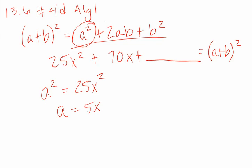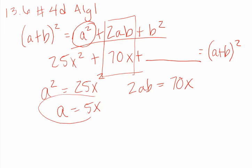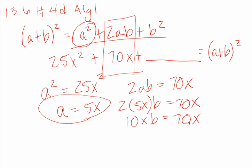Since my second term is 2AB, and 2AB equals 70X, and I know that A is 5X, then 2 times 5X times B equals 70X. This becomes 10X times B equals 70X. I divide both sides by 10X, and they cancel to say that B equals 7.